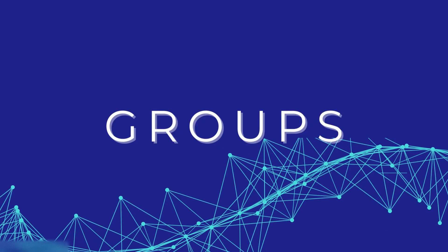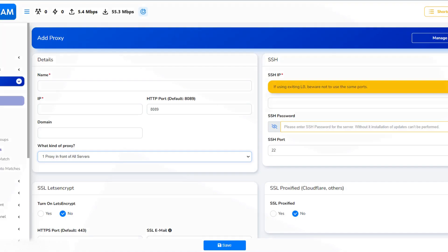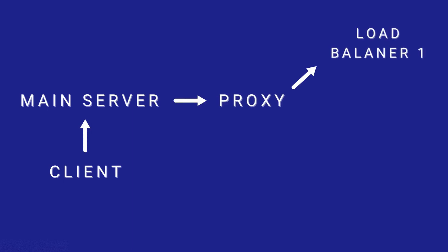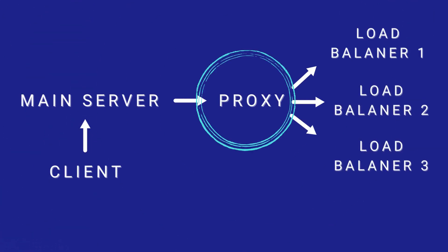Now we will talk about groups. The best option to use for groups is one proxy to all servers. How it works is the client connects to the main server, then the main server forwards you to the chosen load balancer, passing through the proxy. There is only one proxy for all load balancers.